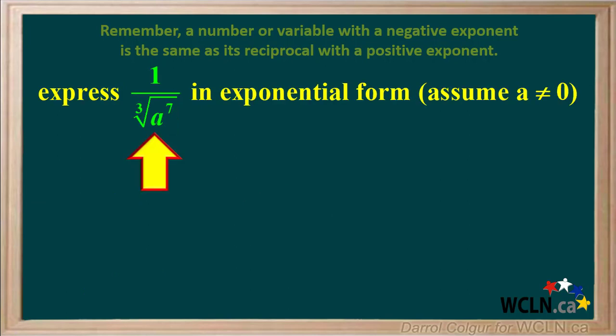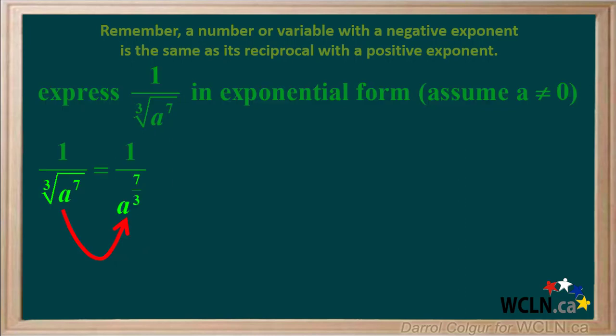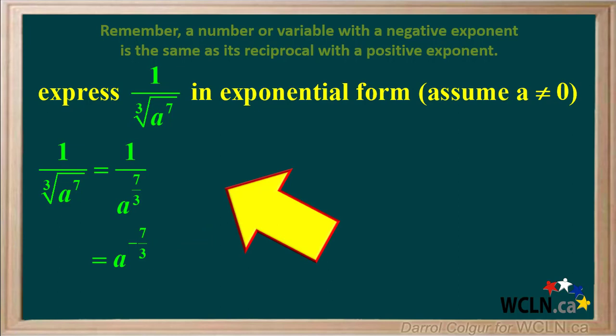In this example, we're asked to express 1 over the cube root of a to the seventh in exponential form. We'll assume that a is not equal to zero to avoid having a zero in the denominator. The cube root of a to the seventh can be converted to a to the power of 7 over 3. And 1 over a to the seven thirds is the same as a to the negative seven thirds. Here's the full solution. If you like, pause the video and review the steps yourself.